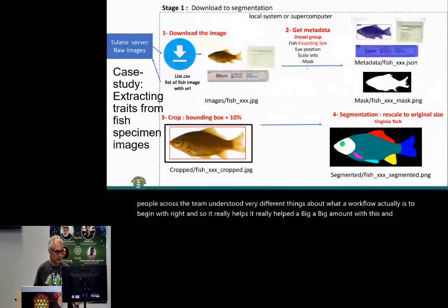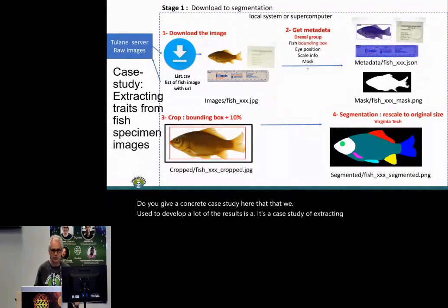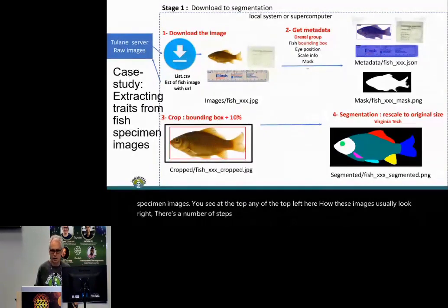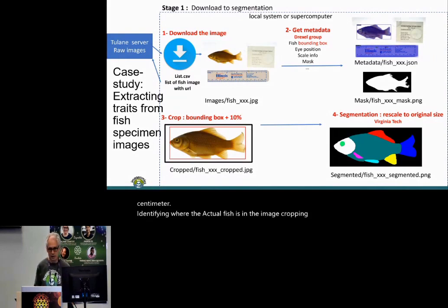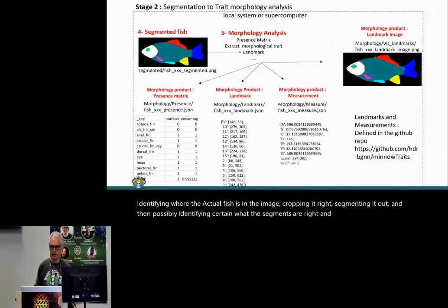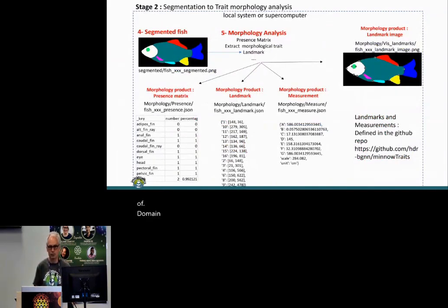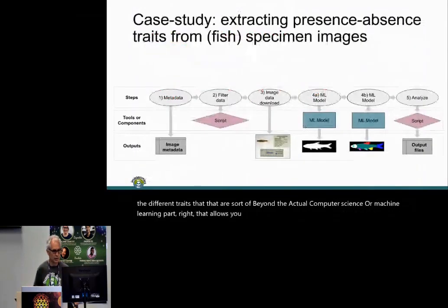To give a concrete case study, we extracted traits from fish specimen images. You can see near the top left how these images typically look. There are steps involved: identifying where the ruler is to know how many pixels correspond to a centimeter, identifying where the fish is in the image, cropping it, segmenting it out, and identifying what the segments are. Then there's a domain-specific part — how do you actually quantify the different traits beyond the machine learning part to answer scientific questions.